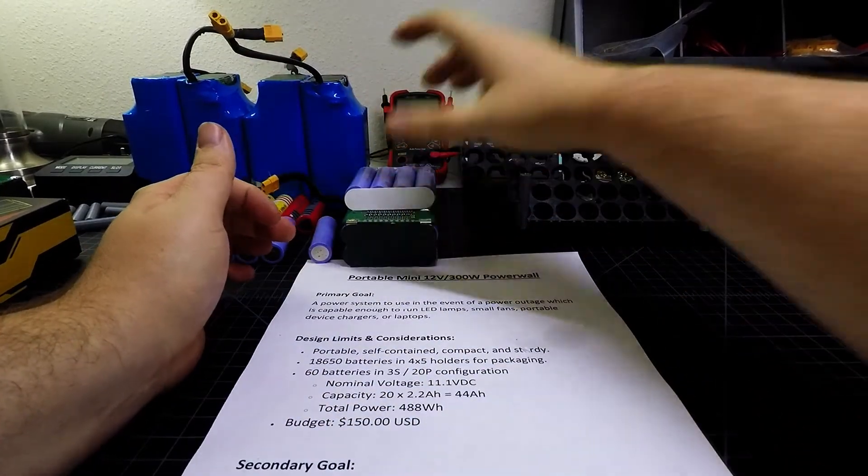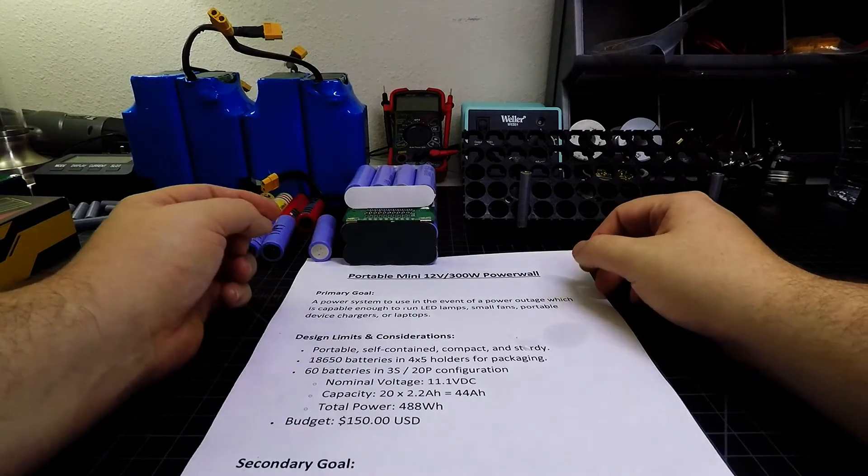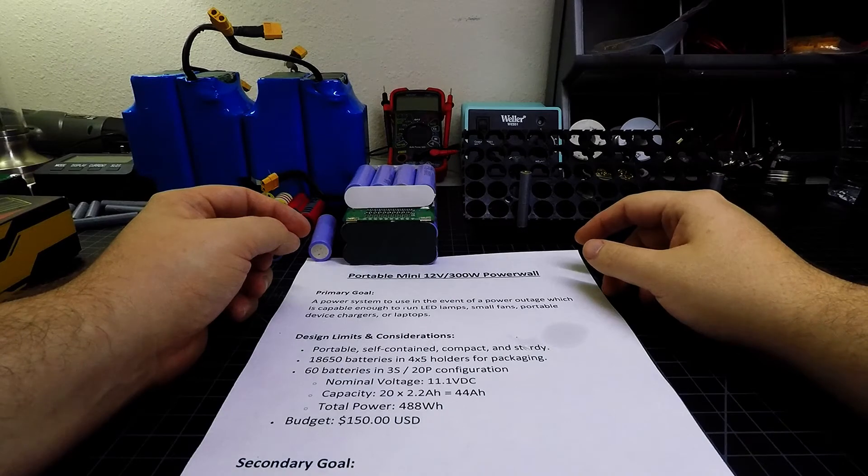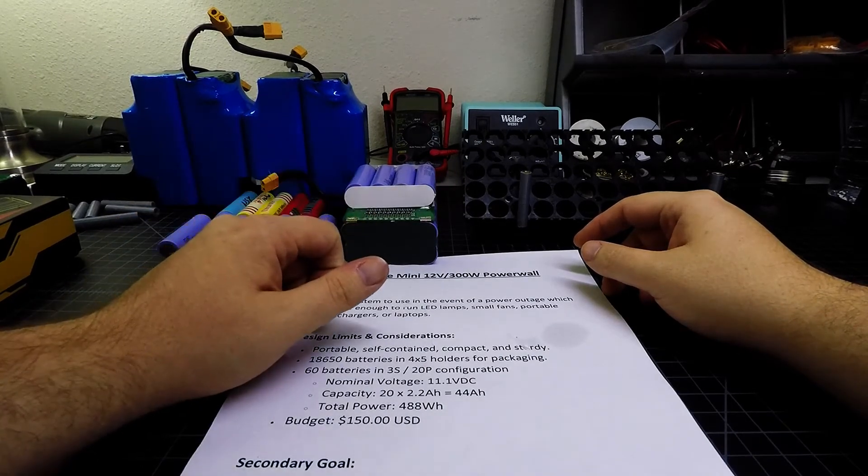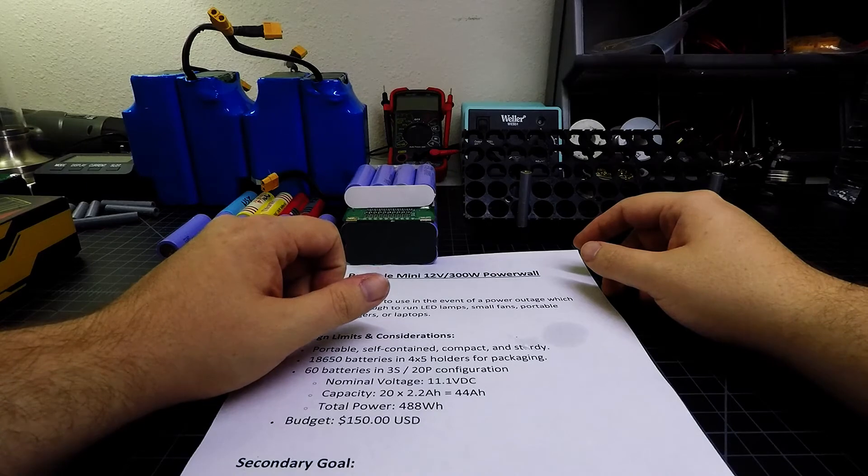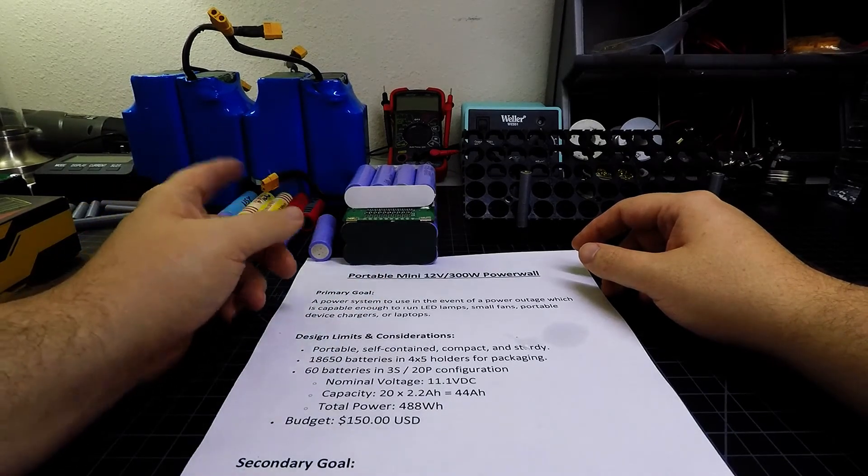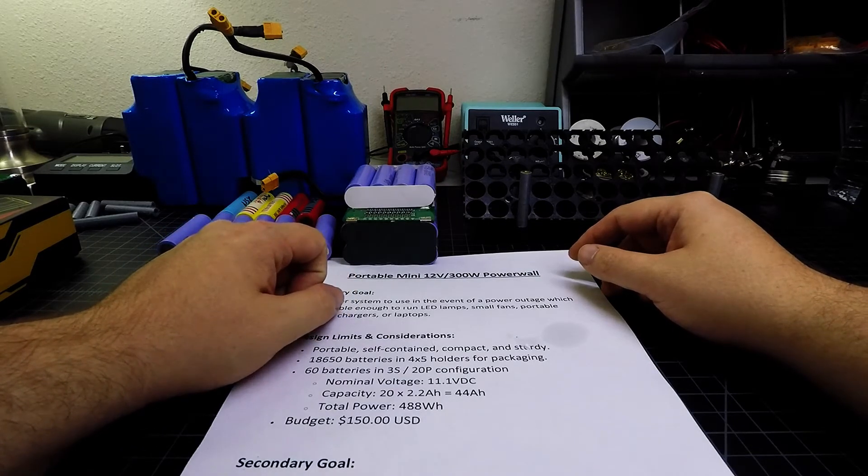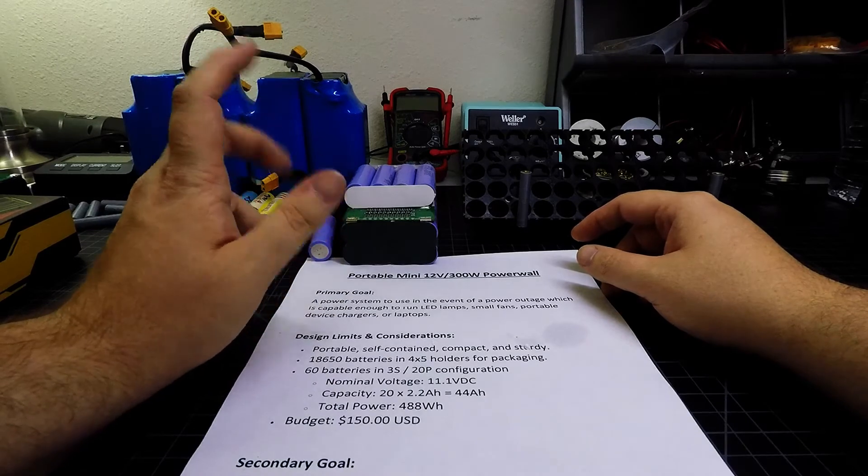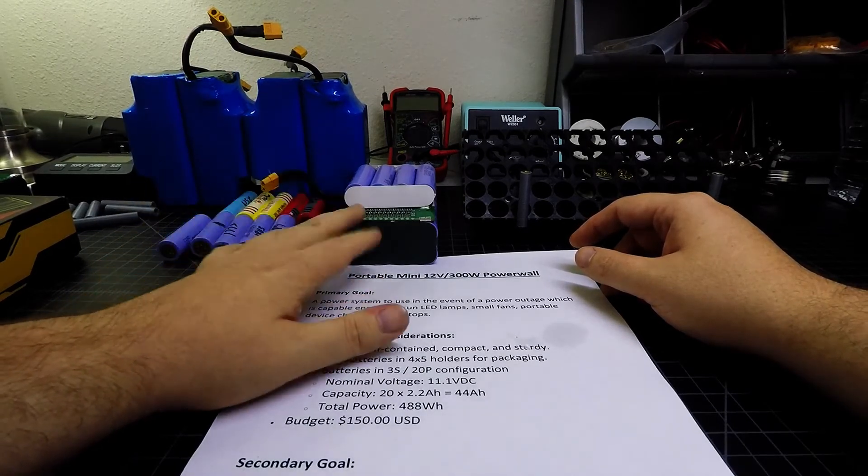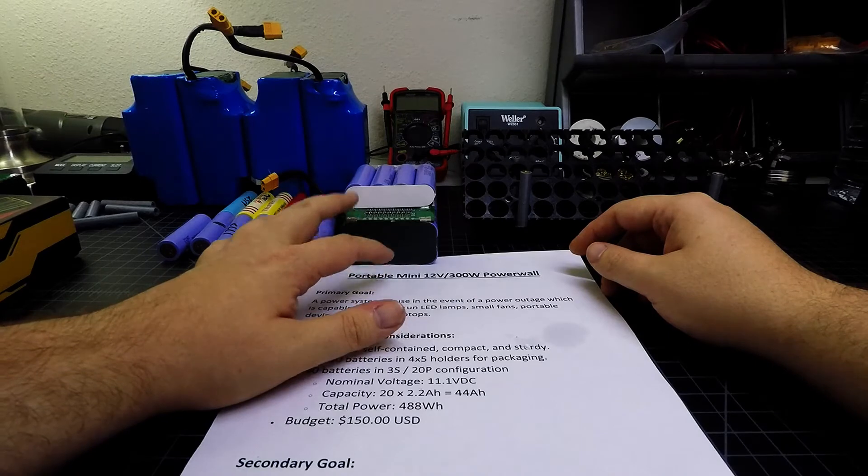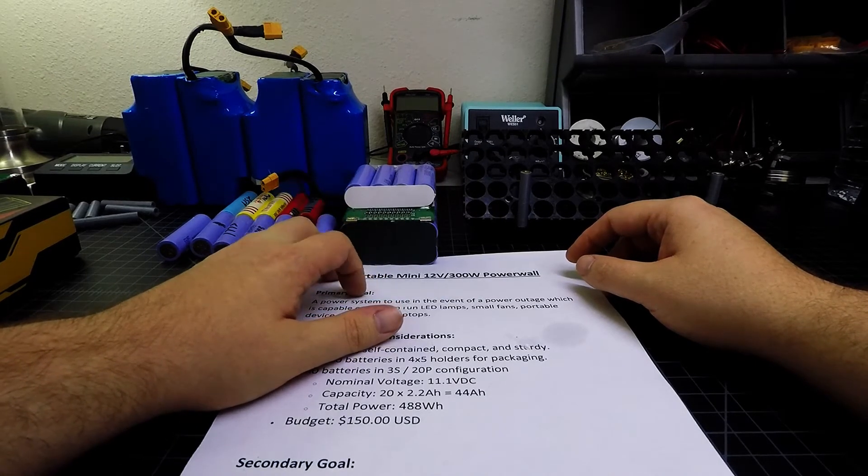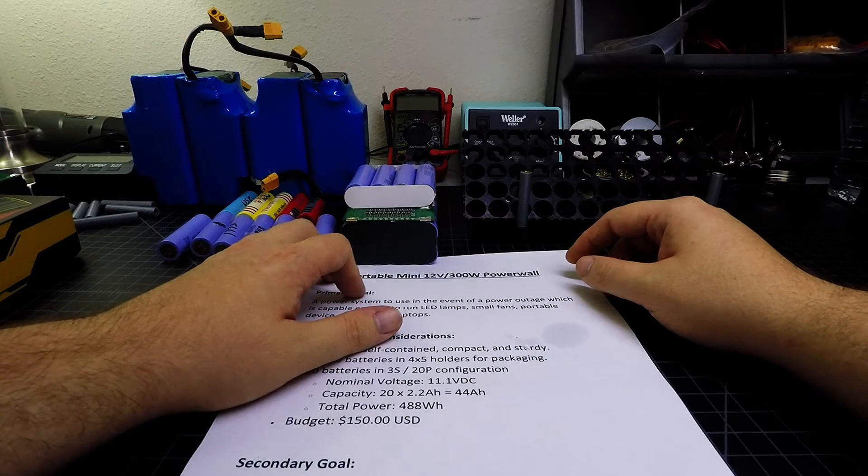So with that, we'll go ahead and wrap up our introduction video here to the project. In the next video, we're probably going to take a closer look at some of these cells, and we're going to look into the process of harvesting cells from a new laptop battery that I grabbed off Amazon, that was cost effective. So we'll look at that process and look at how well those battery cells perform, and then we may start digging into these 36-volt packs that I got off of eBay, or that may be waited for another video down the line.